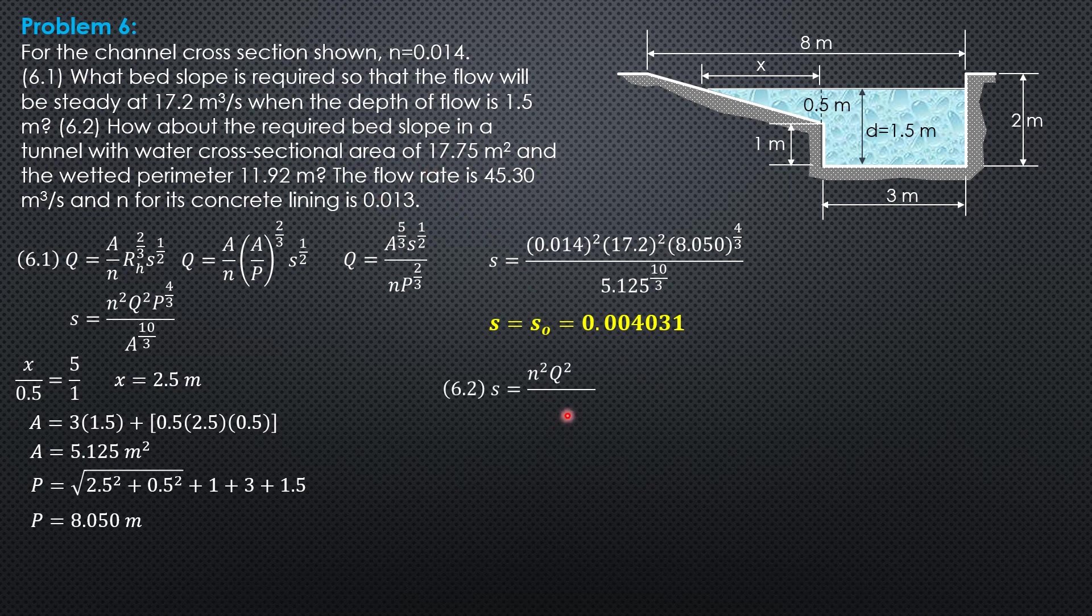S is N square Q square perimeter to the 4 thirds over area to the 10 thirds. So S is 0.013 square, 45.3 square, 11.92 to the 4 thirds over area 17.75 to the 10 thirds. So the slope of the channel bed is 0.0006473.